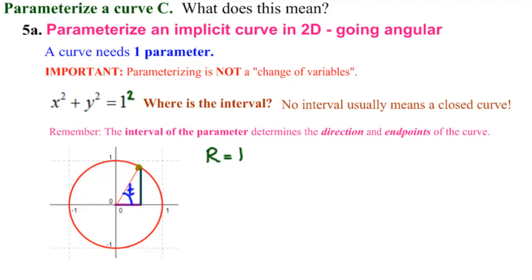We're going to write t here. And then, of course, we get x equals our radius, which is 1, times cosine of our parameter t,